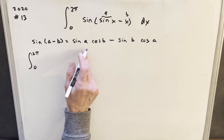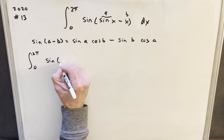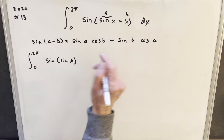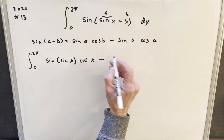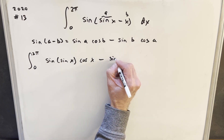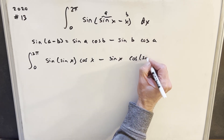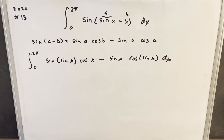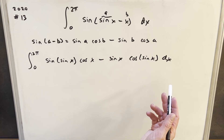So putting this together: for sine of a we're going to have sine(sin x), cosine of b will be just cosine x, minus sine of x and cosine of sine x, dx. And then from here, this still doesn't look too easy — we've got a long expression.